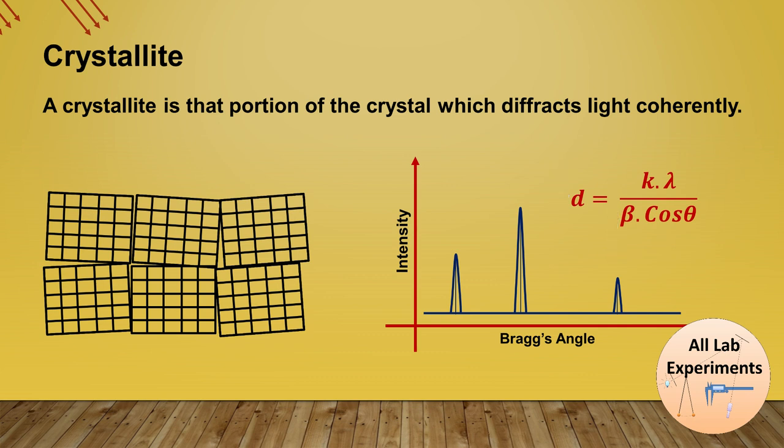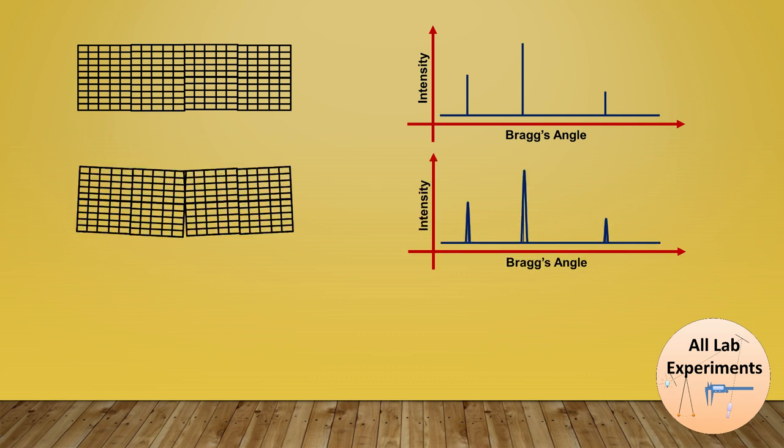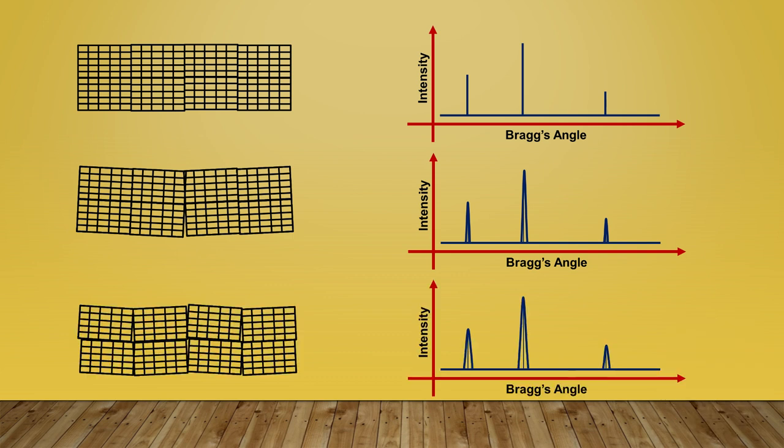So as a summary we can say that if the crystallite is big then we observe particular defined sharp peaks in our XRD pattern. As the size of crystallite decreases, so these peaks get a little bit broader, and if we further decrease its size we will observe further broadness in these peaks.